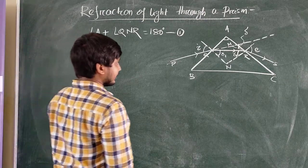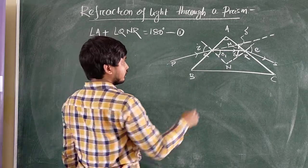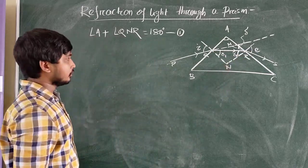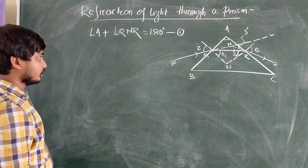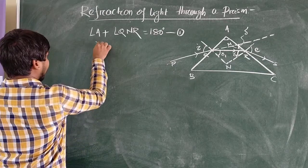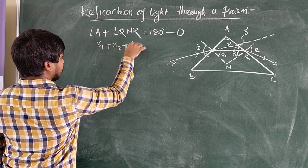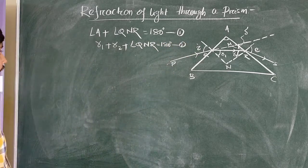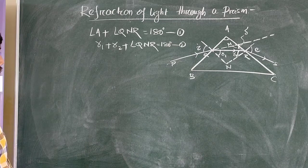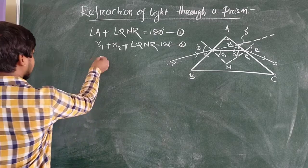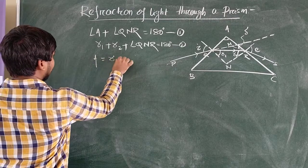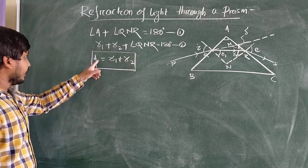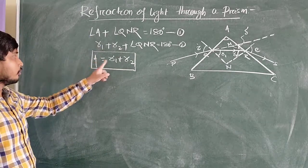In triangle QNR, R1 plus R2 plus angle QNR also equals 180 degrees — this is equation number 2. Now comparing equation 1 and equation 2, since angle QNR is common in both equations, we can say that the value of A is equal to R1 plus R2. So the angle of the prism A equals R1 plus R2.